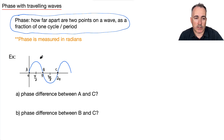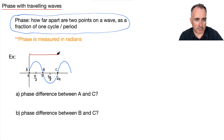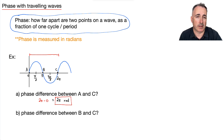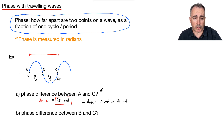This starting point is zero. For the phase difference between A and C, I'm looking at the distance from zero to two pi. That's two pi minus zero, which is just two pi. The units are radians, so the phase difference is two pi radians. Another way to say it is that these two points are actually in phase.